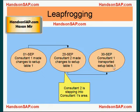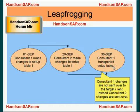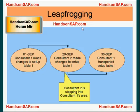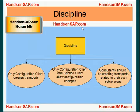This brings a problem. Consultant 1's changes are not sent over to the target client. Instead, consultant 2's changes are sent over, because consultant 2's changes were done more recently. Leapfrogging can be avoided if you follow the discipline, and the discipline is that consultants should be creating transports related to their own setup area.